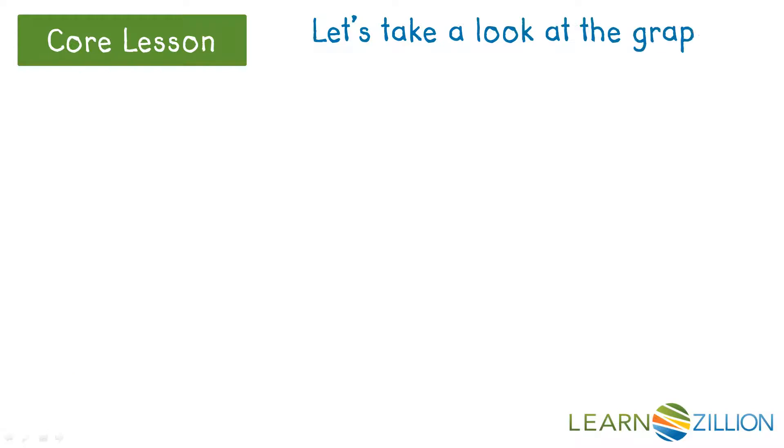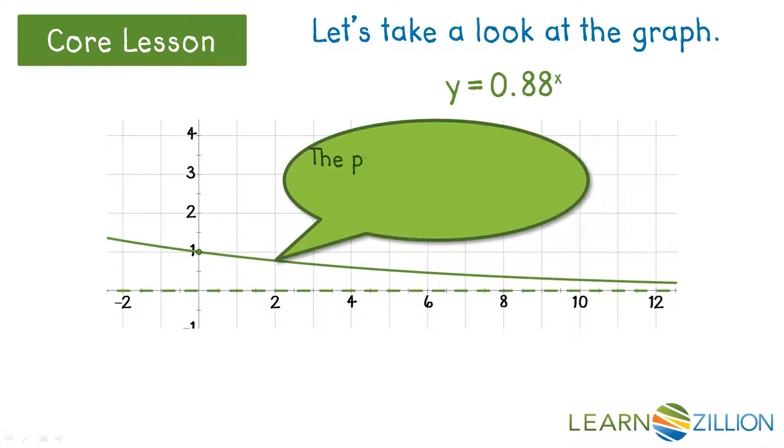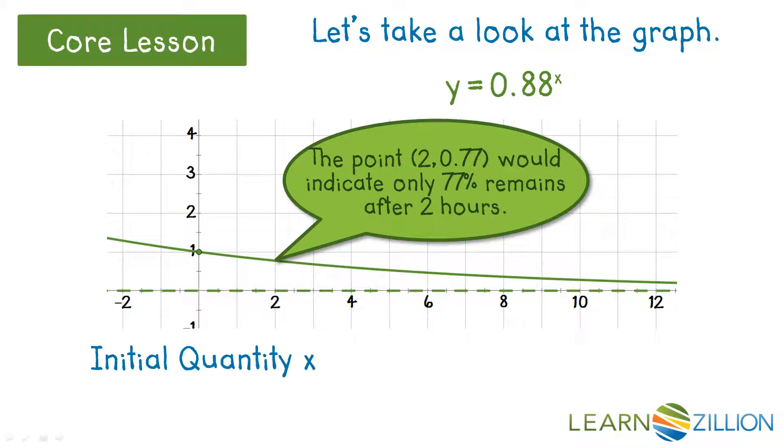Let's take a look at our percent remaining graph. The point would indicate only 77% remains after 2 hours. So if we took an initial quantity times the percent left, it would give us the quantity of caffeine left after x hours.